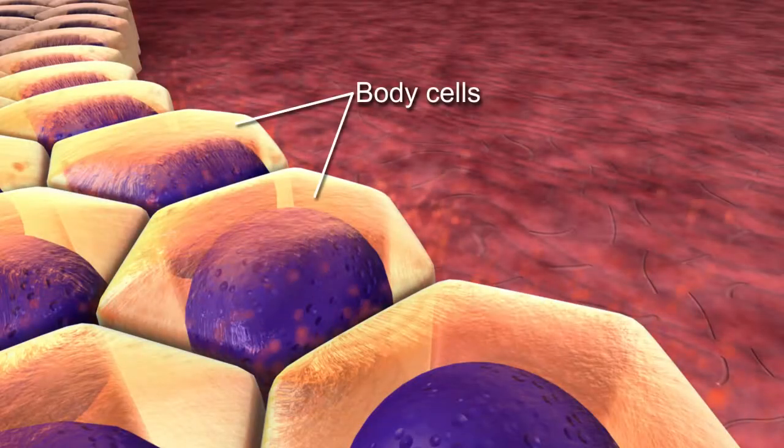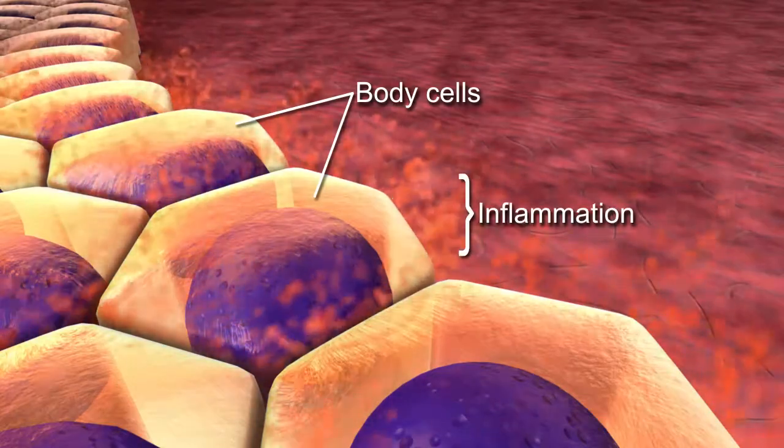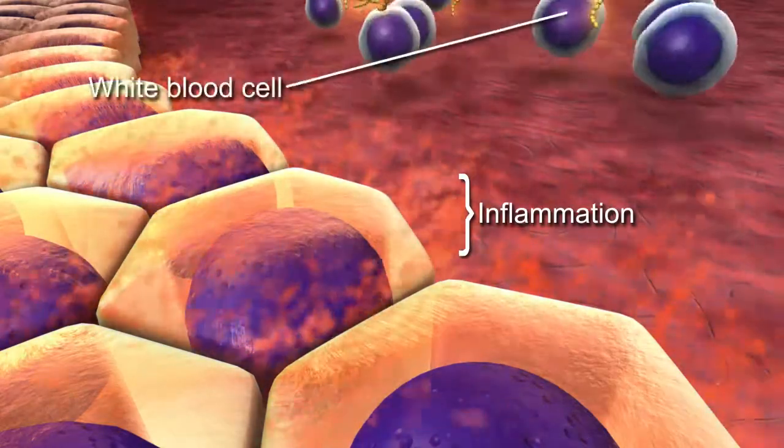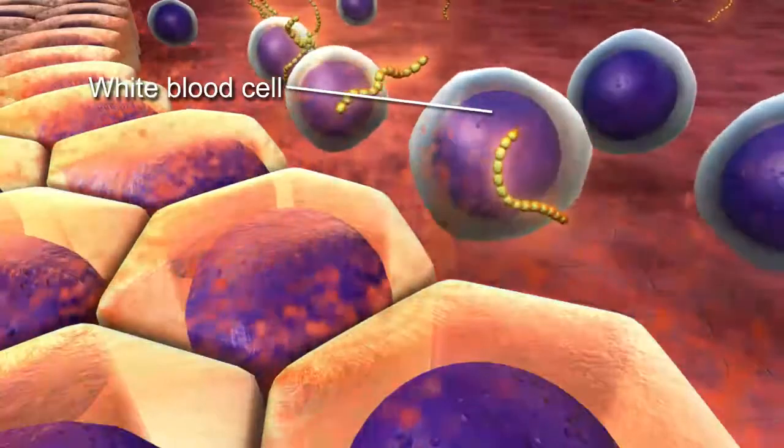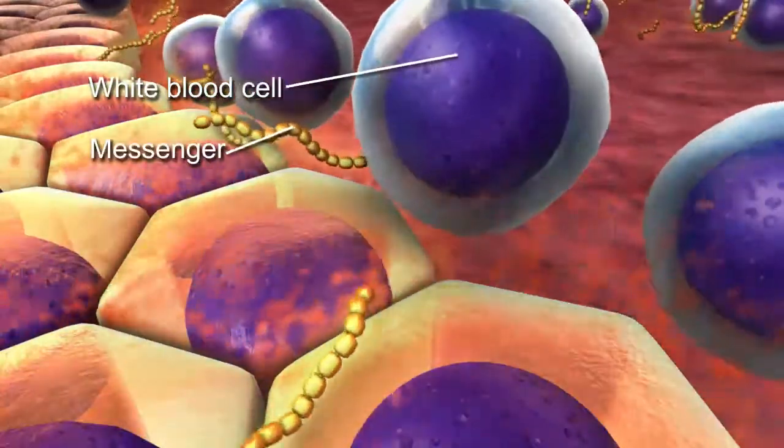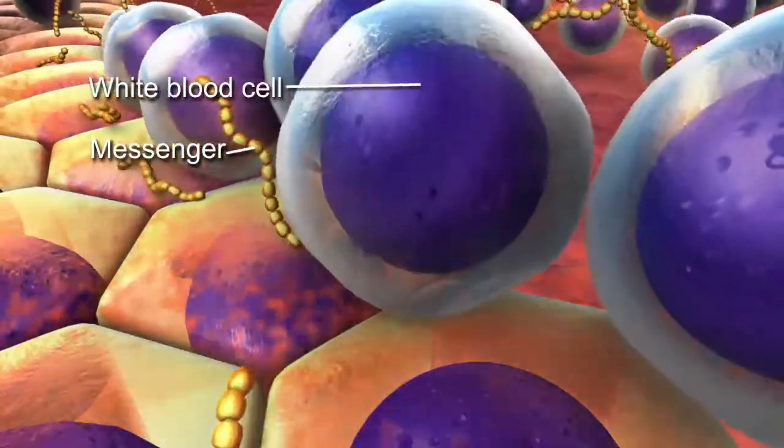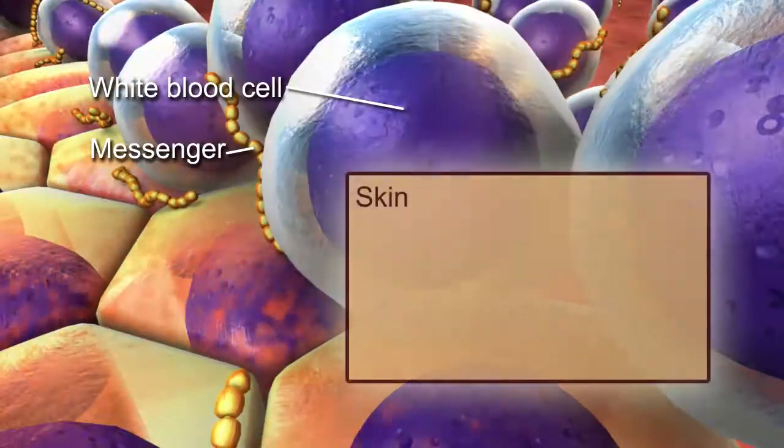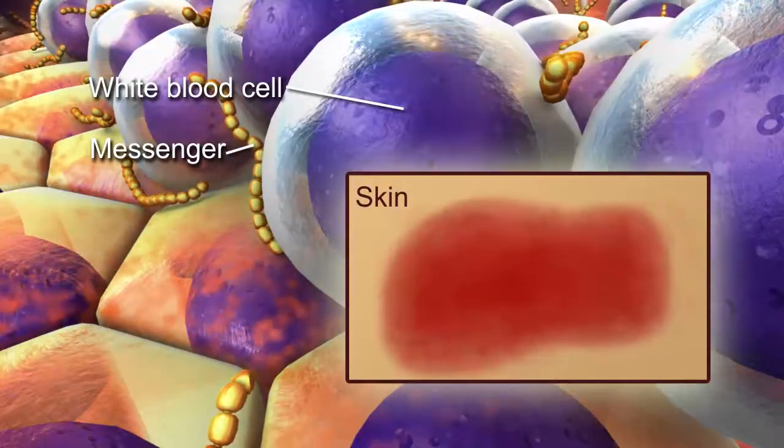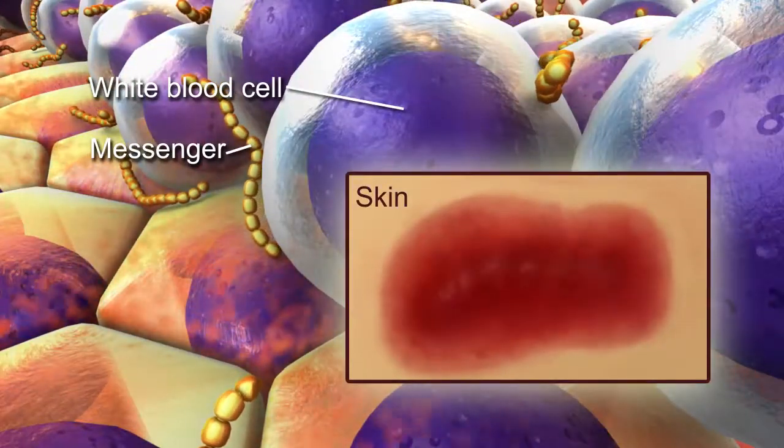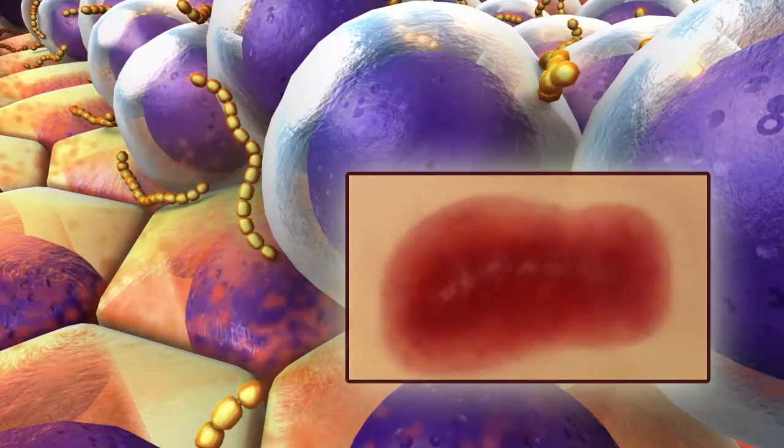The body normally responds to inflammation or cell damage by producing white blood cells and chemical messengers to fight an infection or repair damage. However, in some cases, the surge of all of these substances to a localized area of the body can cause symptoms of inflammation and damage to the body's tissues.